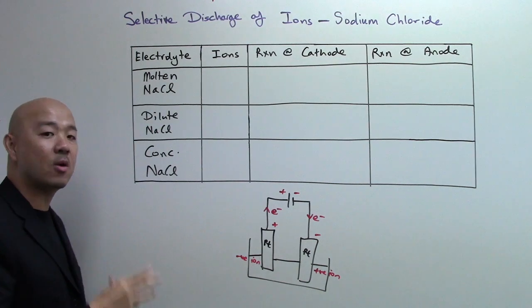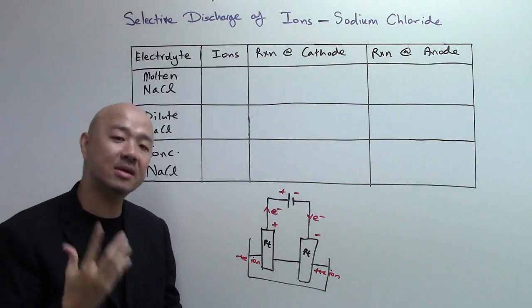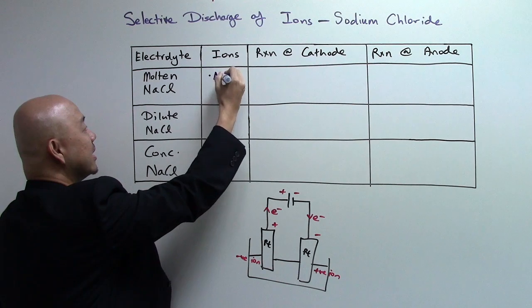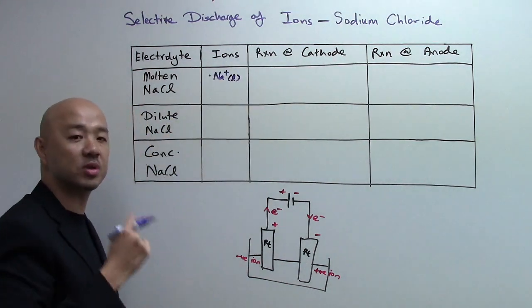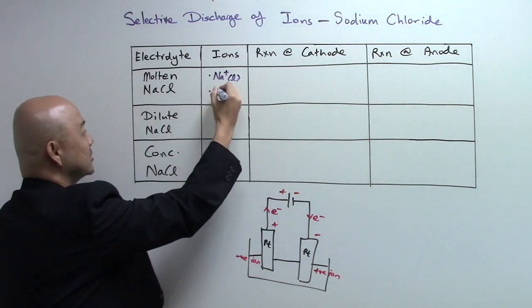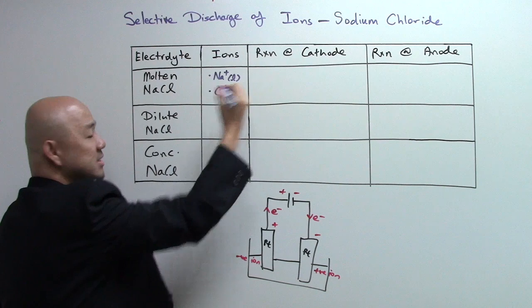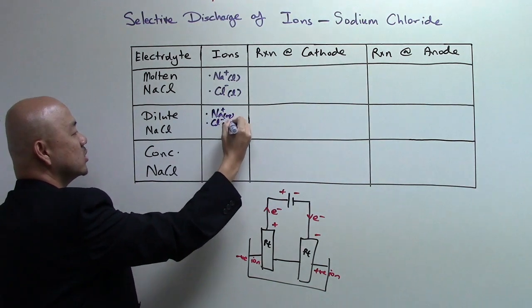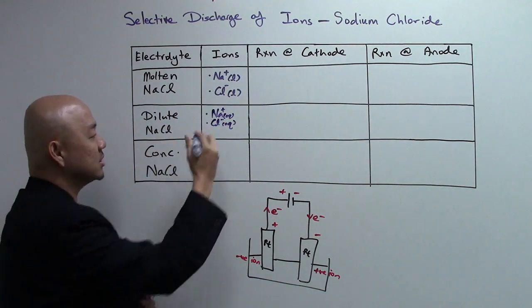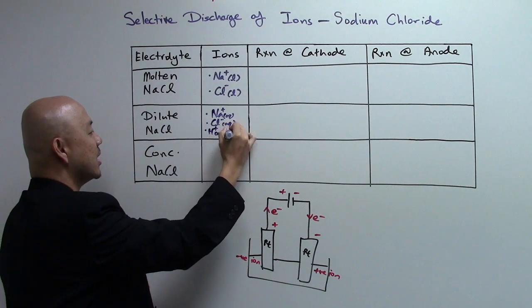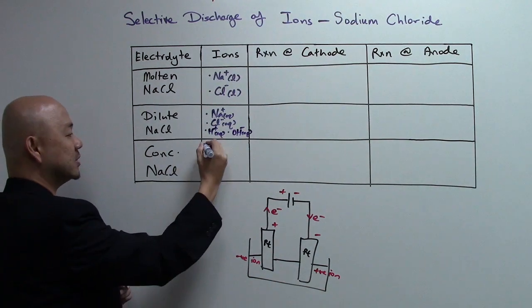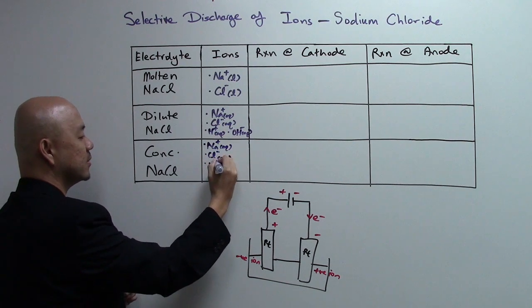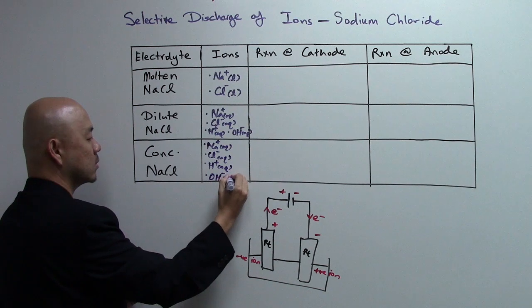Now the first step is always to write down the ions, whereby I realize a lot of students miss out on that. They must be very good with this. So the ions over here present will be Na+ molten, with the state symbols. This helps us to prevent careless mistakes, errors because of callousness. So this is molten. Dilute will be Na+ aqueous, Cl- aqueous, plus do note that dilute there is water, so you still have your H+ and your OH- ions present. Same for this side. Concentrated.